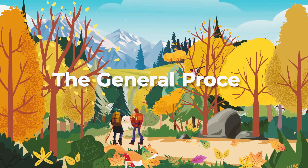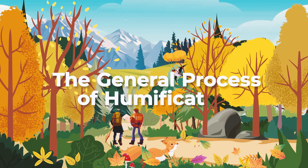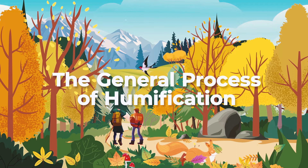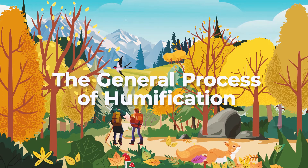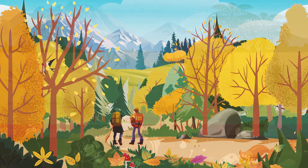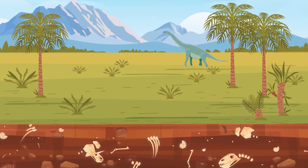This video explains the general process of humification. Mr. Fulvic's plant complex AGT-50 is derived from a prehistoric humate that is high in organic acids, particularly fulvic acid.